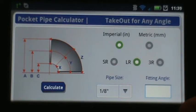And then below that you'll see three radio buttons: the SR, LR, and 3R. The SR is short radius which is one times the pipe size. Long radius which is one and a half times the pipe size. And three radius which is three times the pipe size.